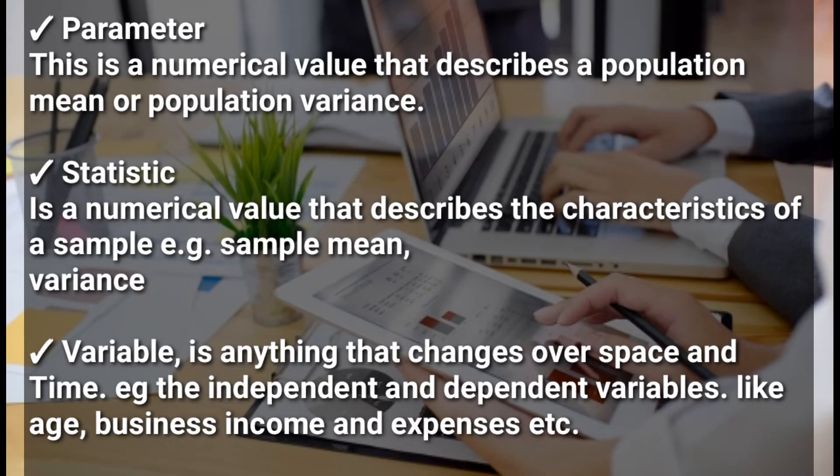Another term we have is a parameter. A parameter is a numerical value that describes a population — for example, population mean or population variance. Then a statistic is a numerical value that describes the characteristics of a sample — for example, sample mean or sample variance. So population pairs with parameter (P to P), and sample pairs with statistic (S to S).